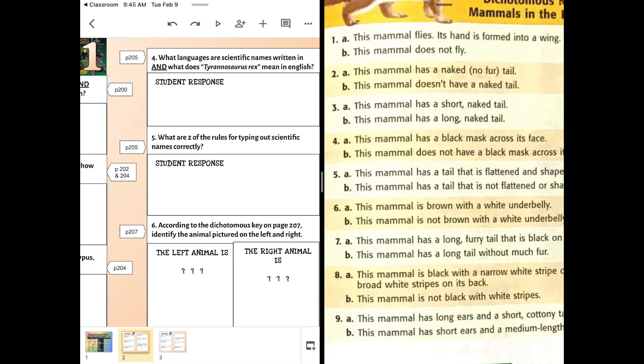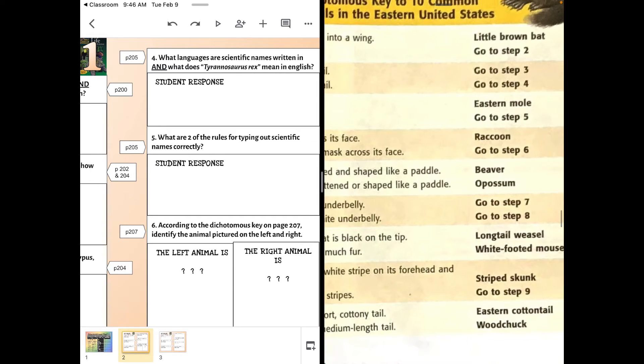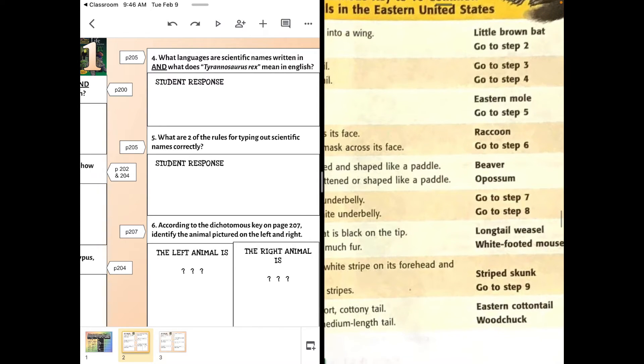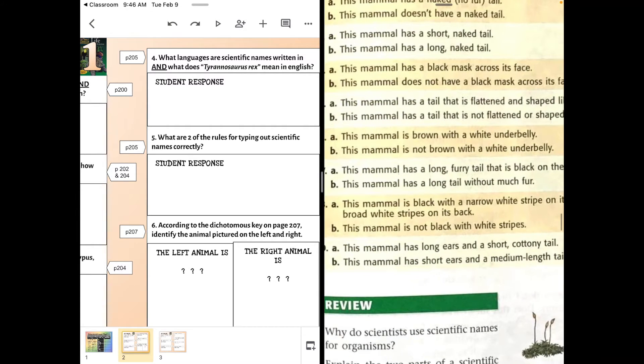Step four: this mammal has a black mask across its face. It does not have a black mask. That's not black. So where does that tell us to go? Step six. It's not a raccoon.